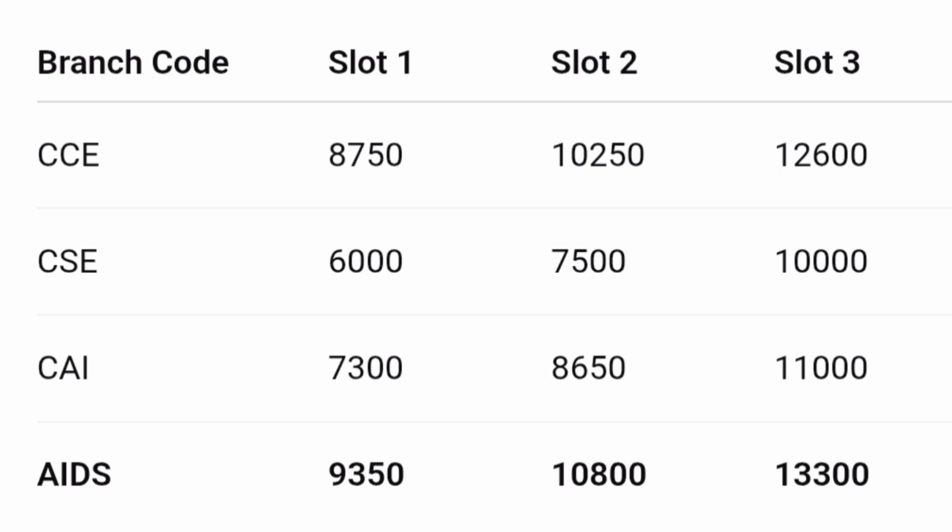The topmost branch in demand is mostly for the home state student, as the maximum number of students will be from the home state. For CSE, you can expect slab 1 up to rank 6,000, slab 2 up to rank 7,500, and slab 3 up to rank 10,000. That is the CSE main cutoff at the Amrita AP campus.